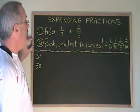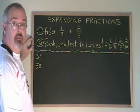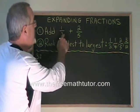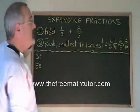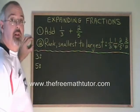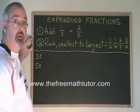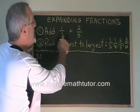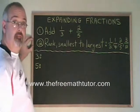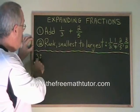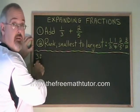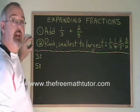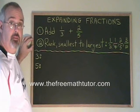In order to find the lowest common denominator of two fractions, we need to know what the lowest common multiples are of the denominators 3 and 5. What I do is I write a 3 and a 5, and then I list their multiples.